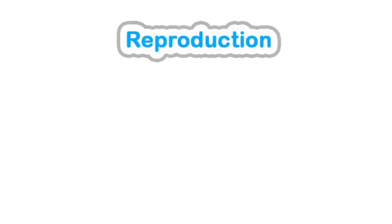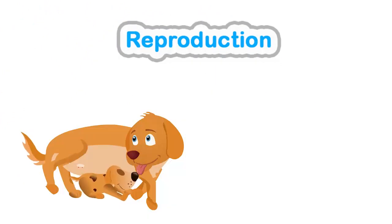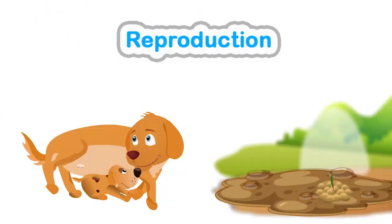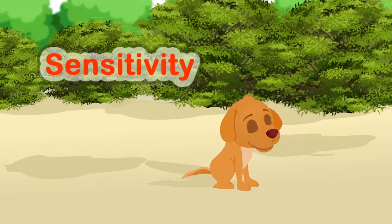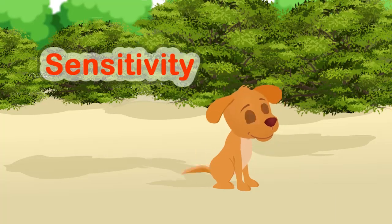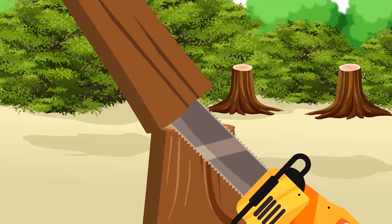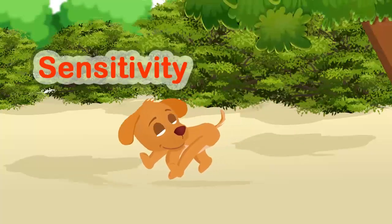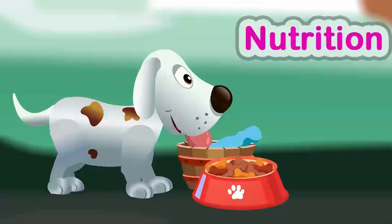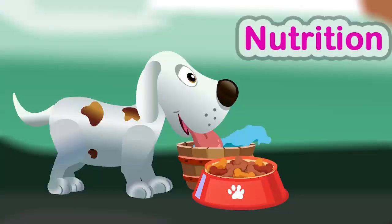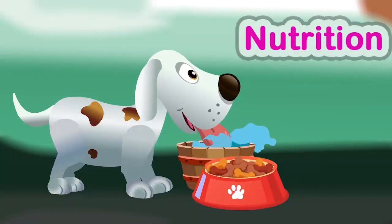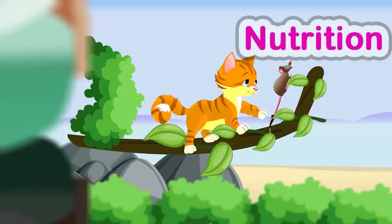Reproduction is when an animal or plant gives birth to younger ones or offspring. Sensitivity is when plants and animals sense changes in their surroundings and react or respond to those changes. Nutrition is the process by which plants and animals obtain their food.